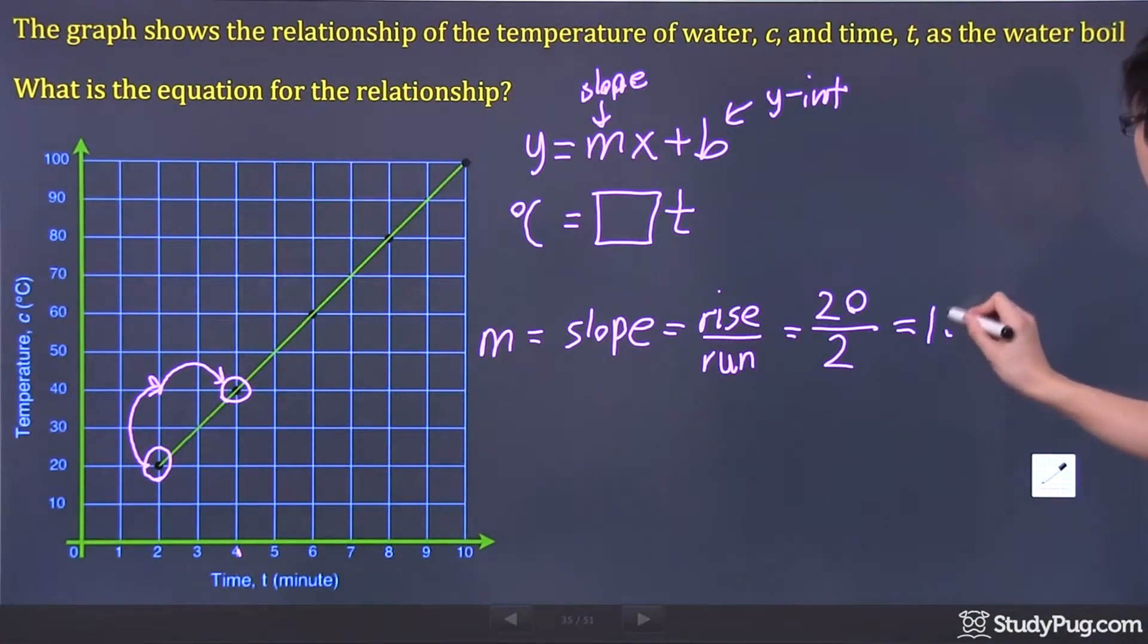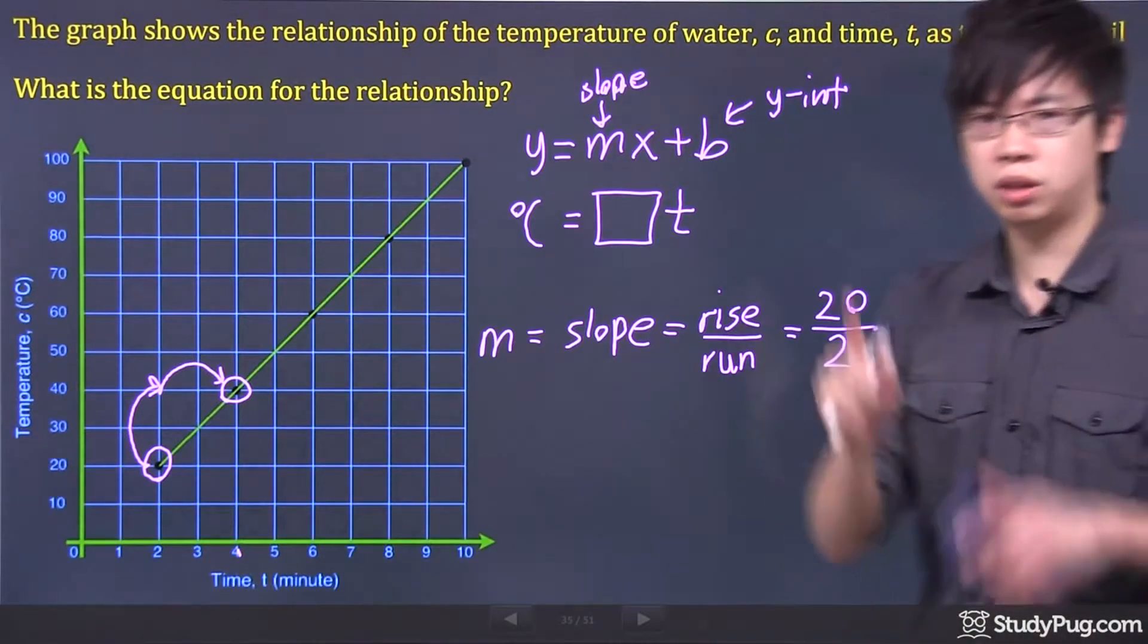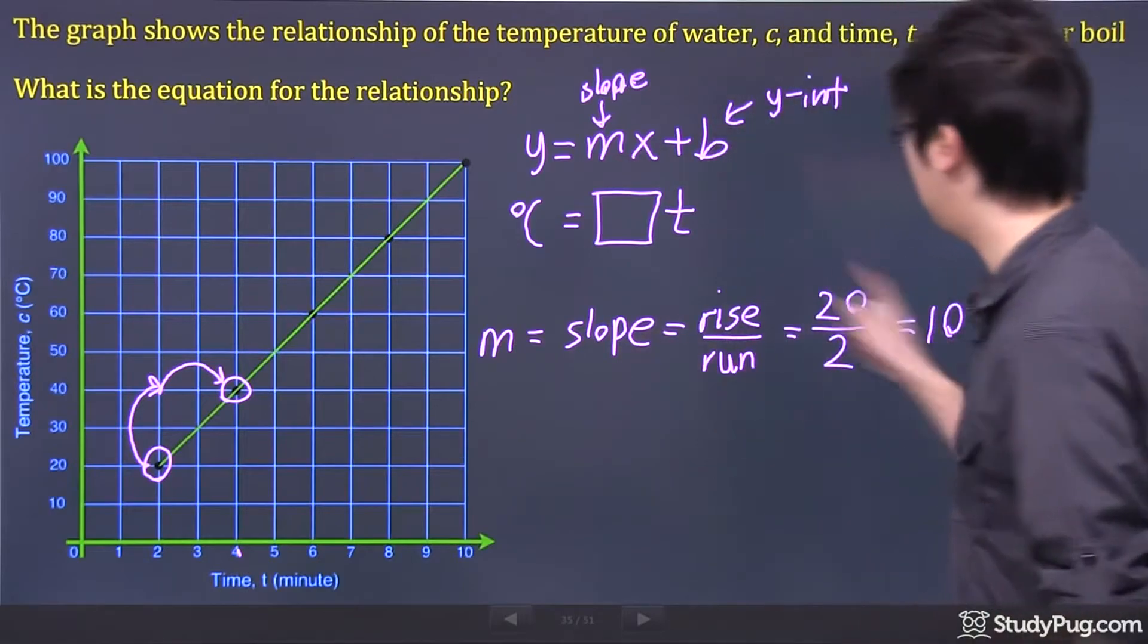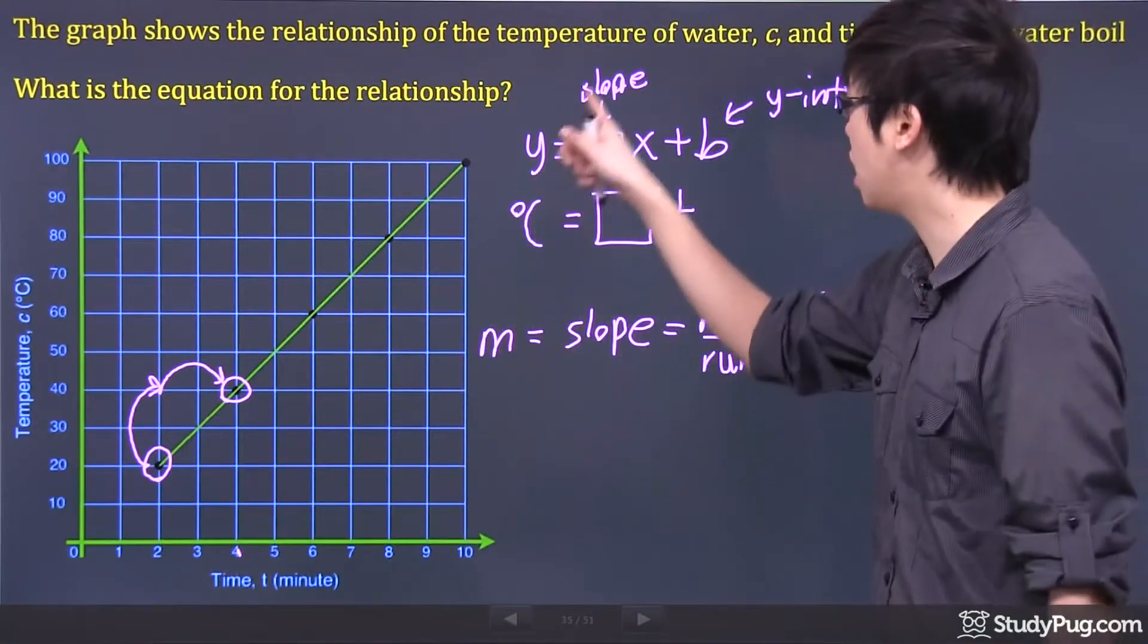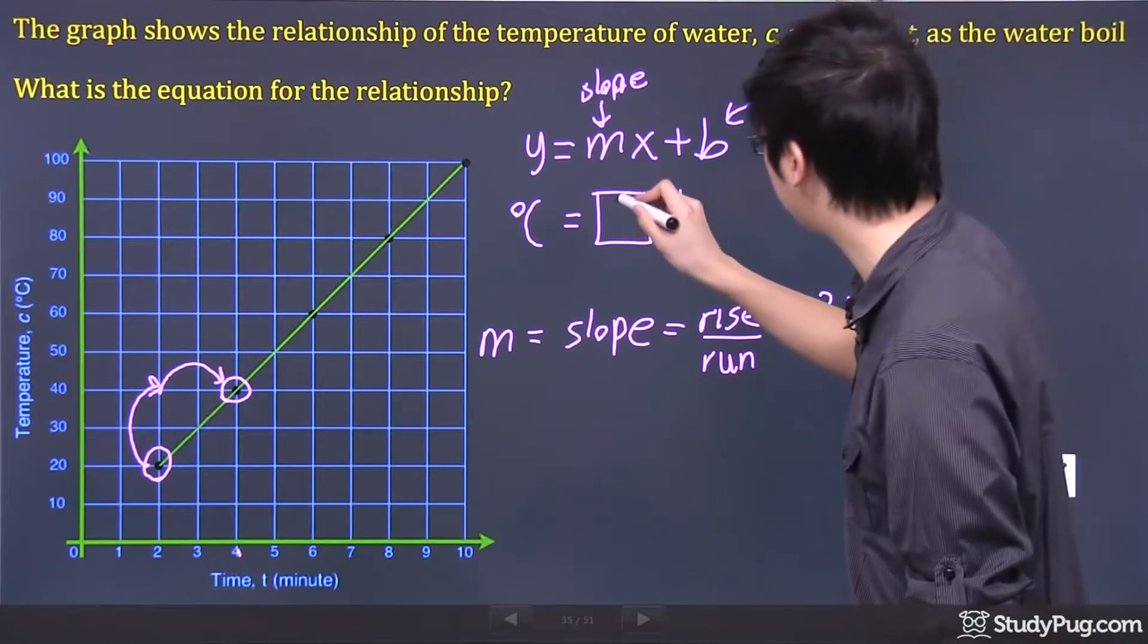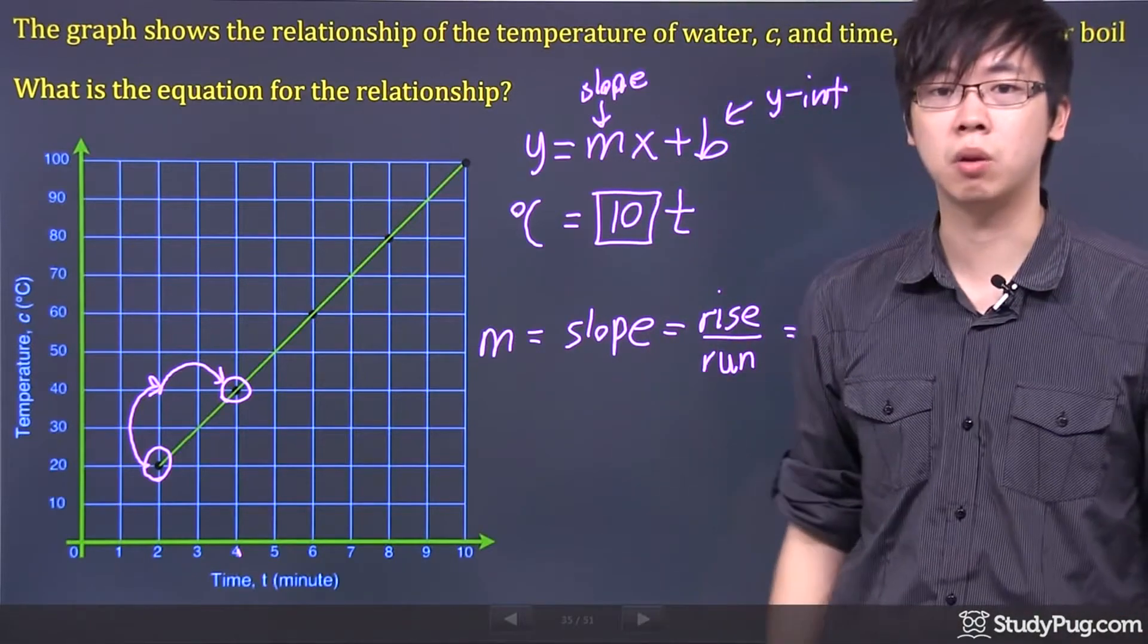So 20 over 2, what do you get? You don't need a calculator for that. At least for me, I don't need one. 10. So the 10 is actually your slope, which is represented by the m in the equation. So guess what goes in here? 10t.